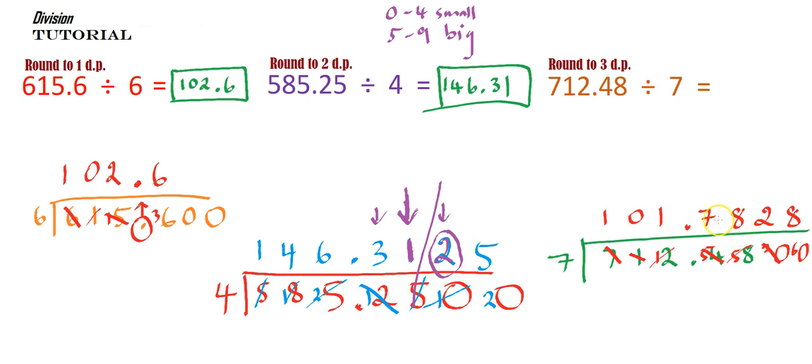So, I need to go to 4 decimal places. 1, 2, 3, 4. Okay, cool. I've got everything I need. I can do this.